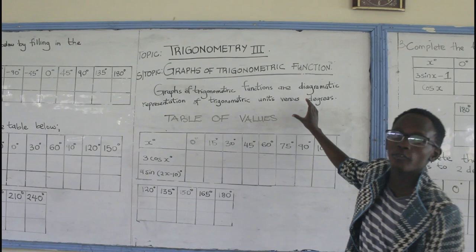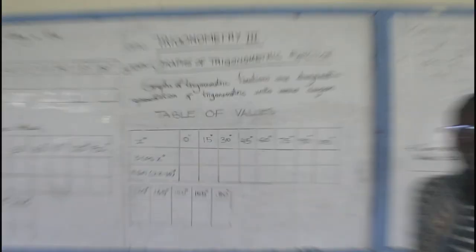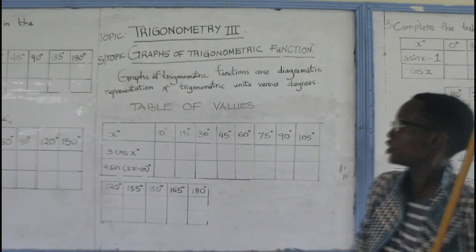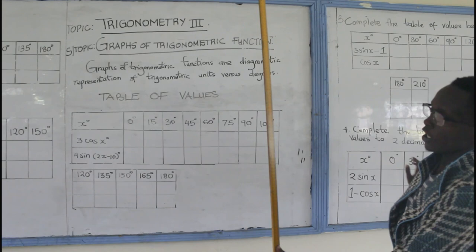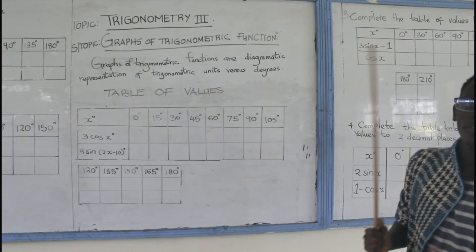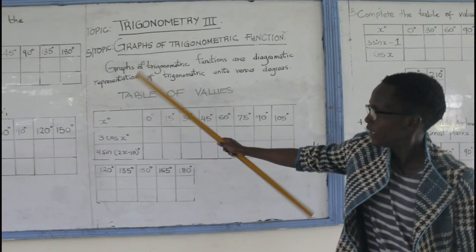Welcome to today's lesson on graphs of trigonometric functions. We're going to cover how to fill in the table of values. Taking you through is Vincent Irohbi. A graph of a trigonometric function is a graphical representation of the trigonometric units versus the degrees — the trigonometric units are on the y-axis and the degrees are on the x-axis.